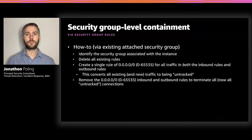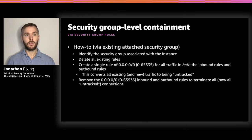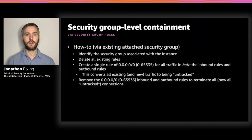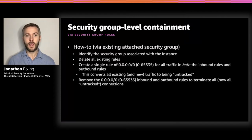How would we perform security group level containment leveraging security group rules? The first way is by leveraging the existing attached security group. We'd identify the security group attached to the instance and delete all existing rules. We'd create a single quad-zero, all-ports rule for all traffic in both inbound and outbound rules — this converts all existing and new traffic to being untracked. We then remove the quad-zero, all-ports inbound and outbound rules to terminate all now-untracked connections.